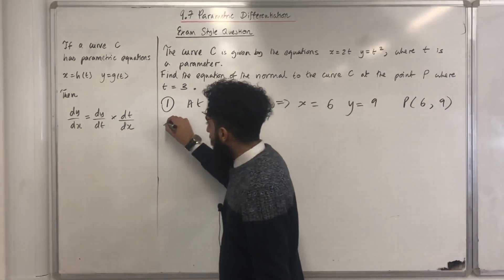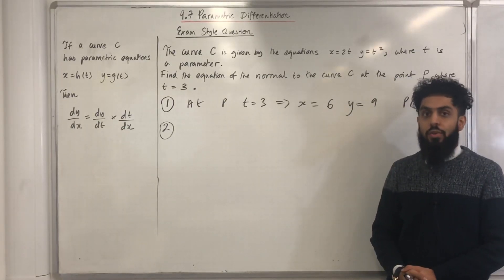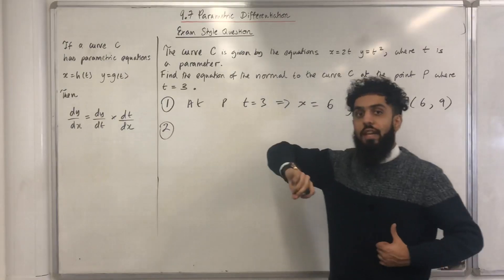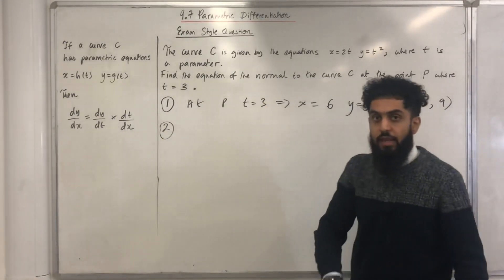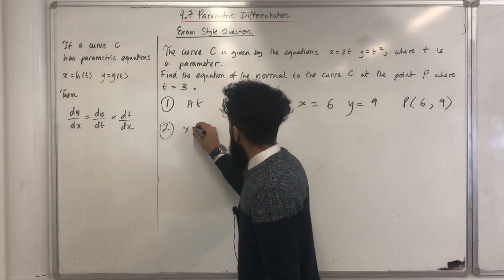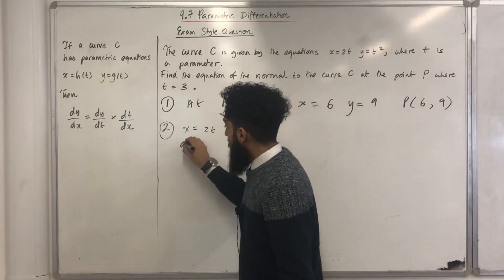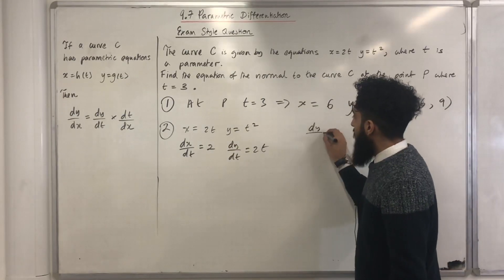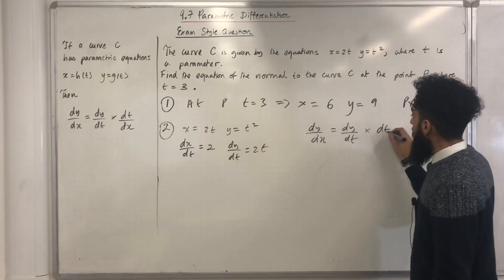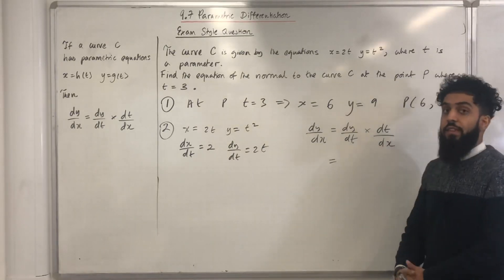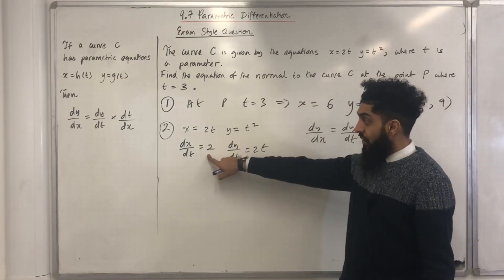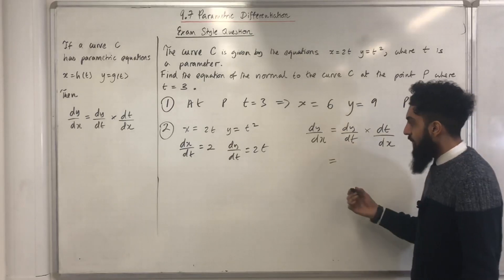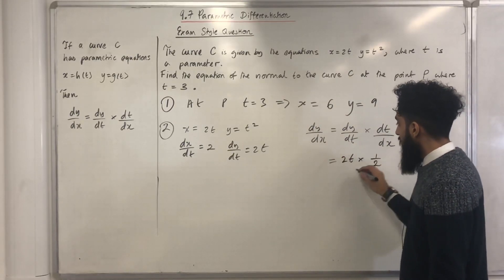Step number 2: find the gradient of the tangent to curve C at point P, where t is equal to 3. To find the gradient of the tangent I need to work out dy over dx. With parametric equations, by the chain rule, dy over dx is dy over dt multiplied by dt over dx. My parametric equations are x equal 2t, y equal t squared. dx over dt is 2, and dy over dt is 2t. dt over dx is the reciprocal of dx over dt, which is 1 over 2. Substituting gives dy over dx equal to 2t multiplied by 1 over 2, which is just t.